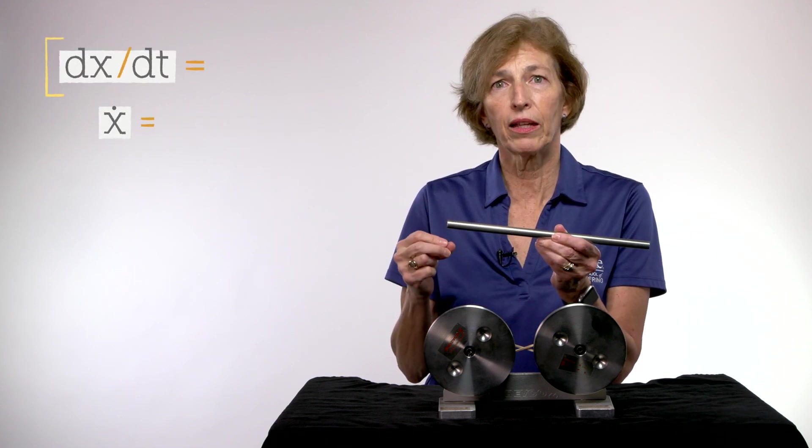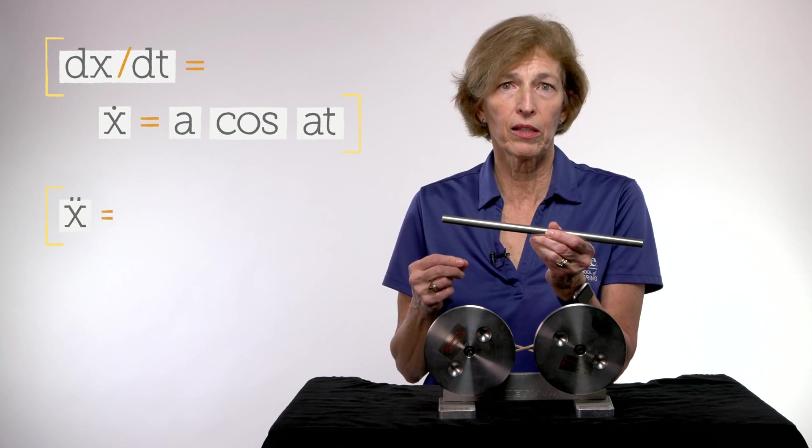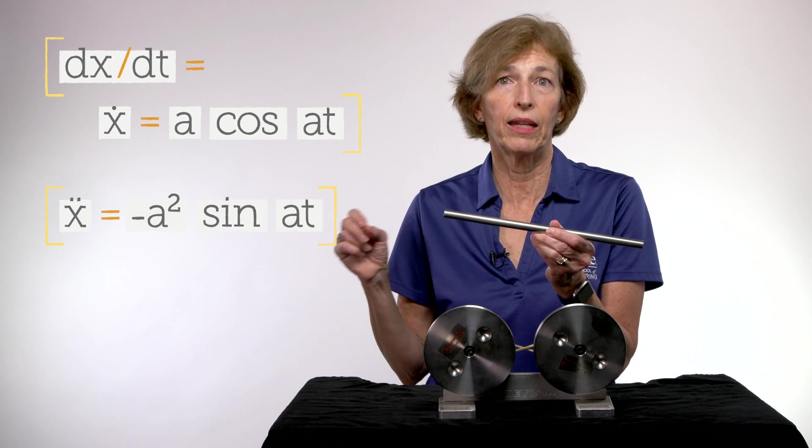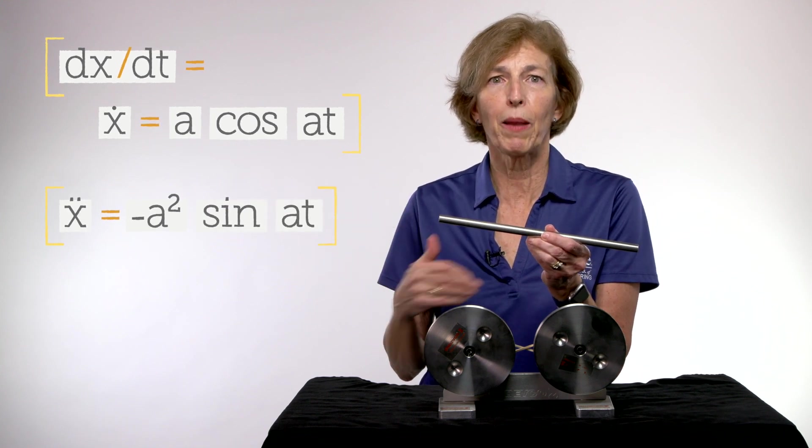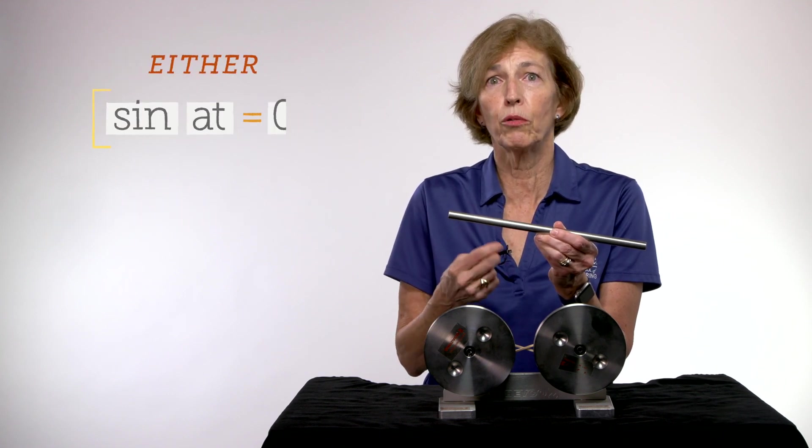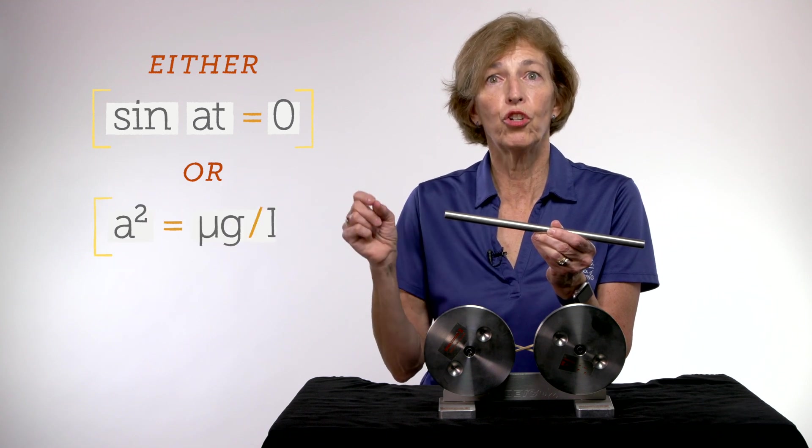If X equals sine AT, the first derivative of X is A times the cosine of AT. And the second derivative of X is then going to be minus A squared sine AT. If we put those functions back into our equation, then only two things are possible. Either the sine of AT is equal to 0, or A squared is equal to mu G over L.